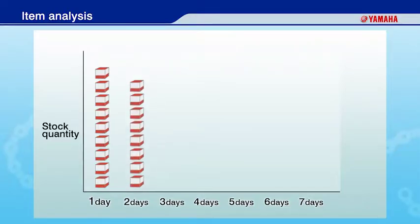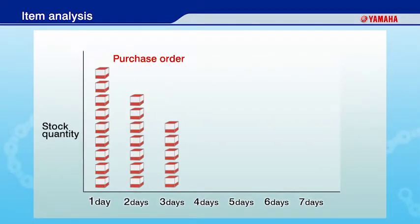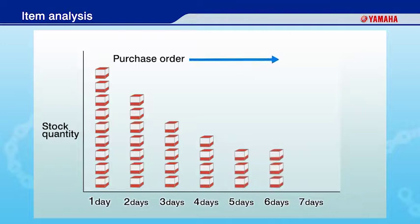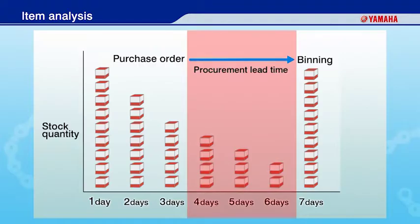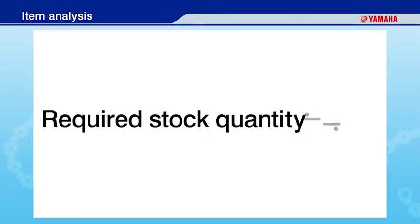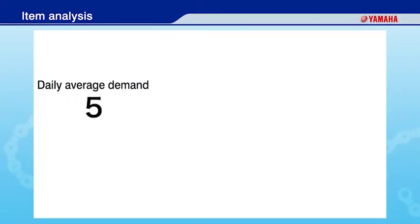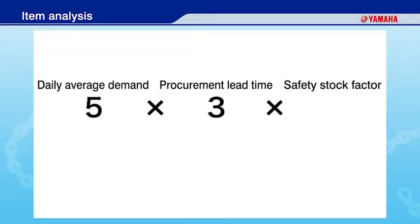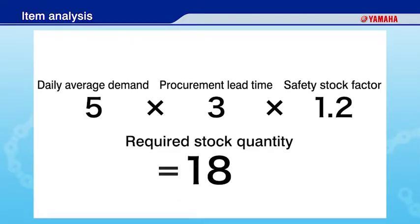Procurement lead time indicates the number of days it takes from purchase order until binning. The safety stock factor is set against a demand fluctuation forecast. We generally use a safety stock factor of around 1.2. For example, with a daily average demand of 5 pieces, a procurement lead time of 3 days, and a safety stock factor of 1.2, your necessary stock quantity would be 18.